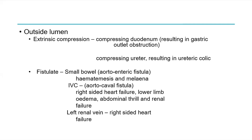Outside the lumen, the aneurysm can compress extrinsically on the duodenum, resulting in gastric outlet obstruction — I've certainly seen a case like that. Compression on the ureter results in ureteric colic. The aneurysm could also fistulate to the small bowel, forming an aorto-enteric fistula. Typically that patient will have a small herald haematemesis followed by a massive GI bleed. If you don't consider this, you may be too late to plan your management.